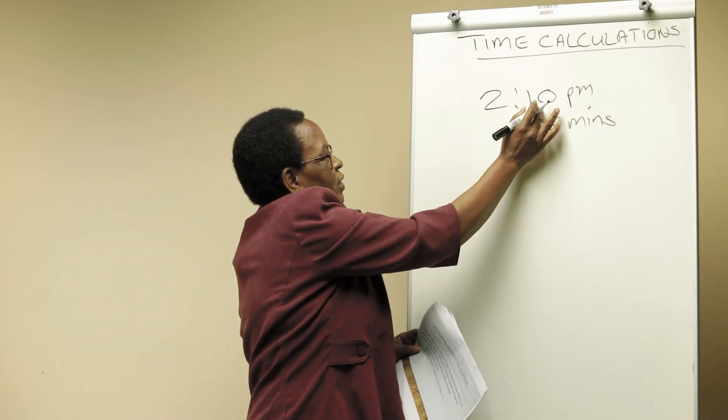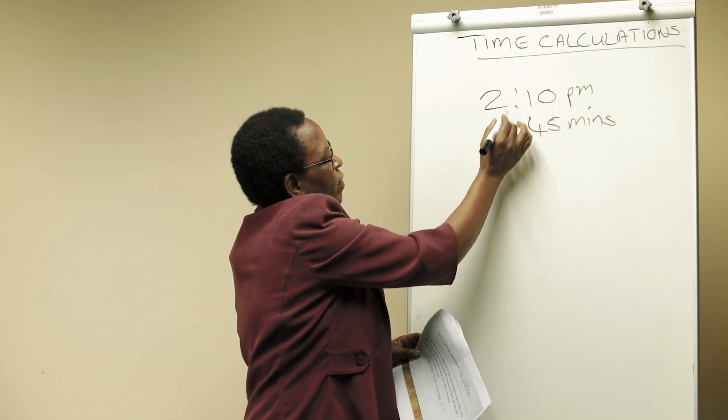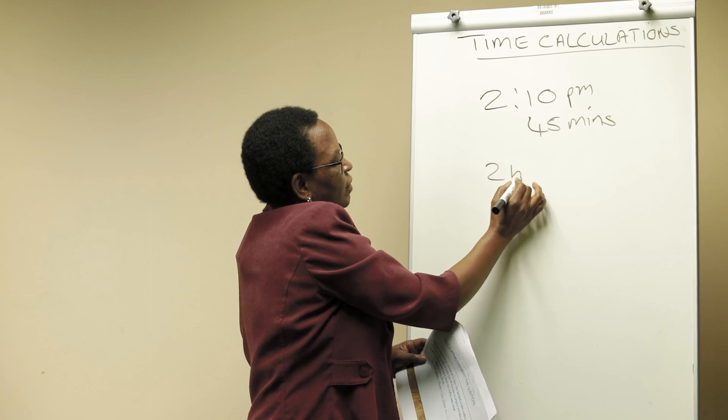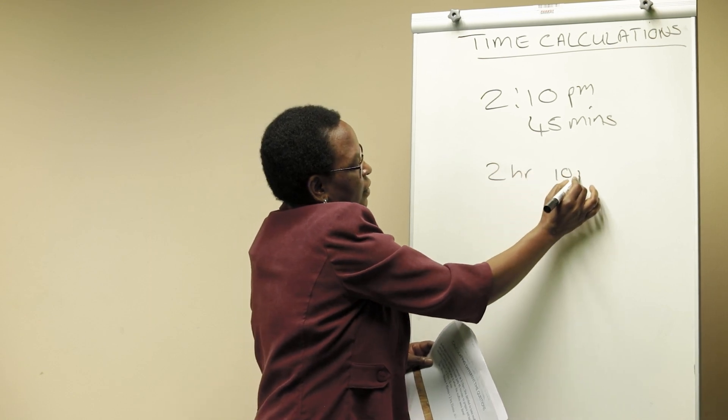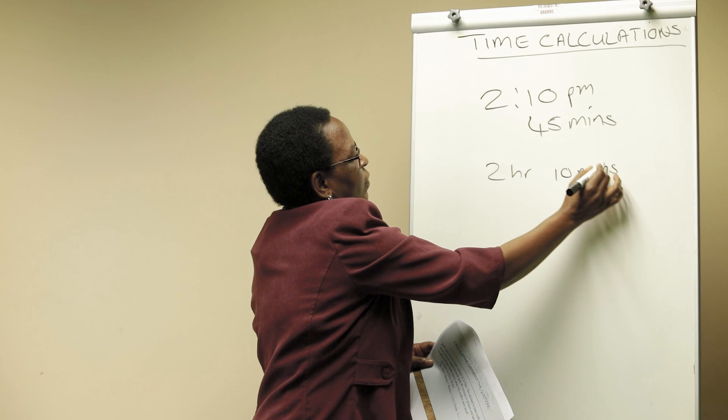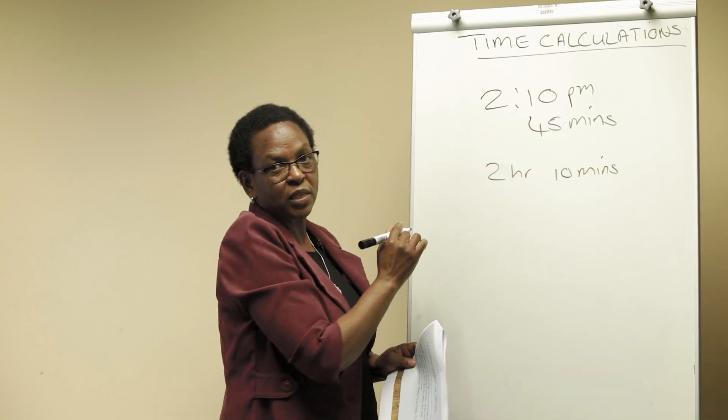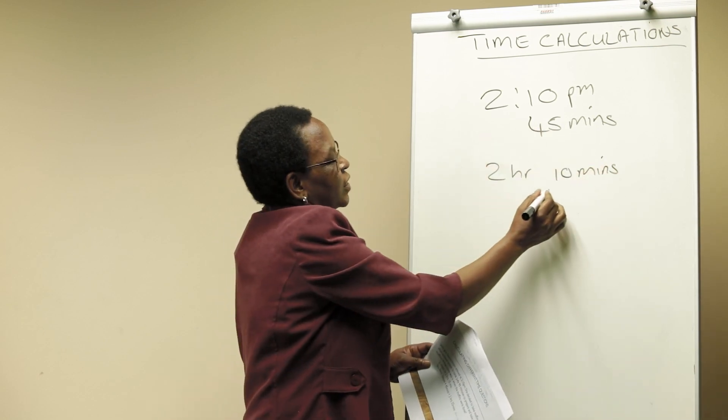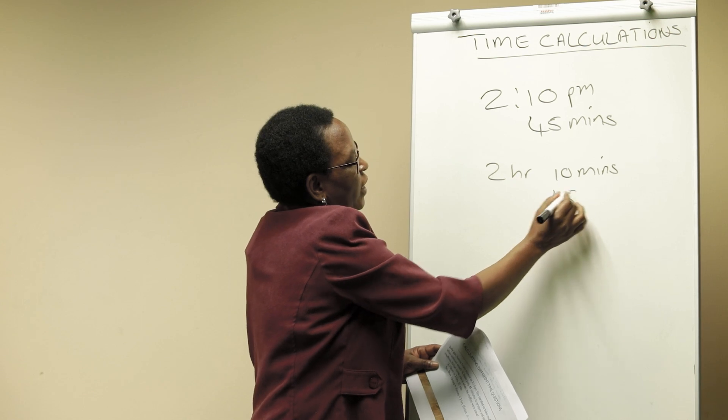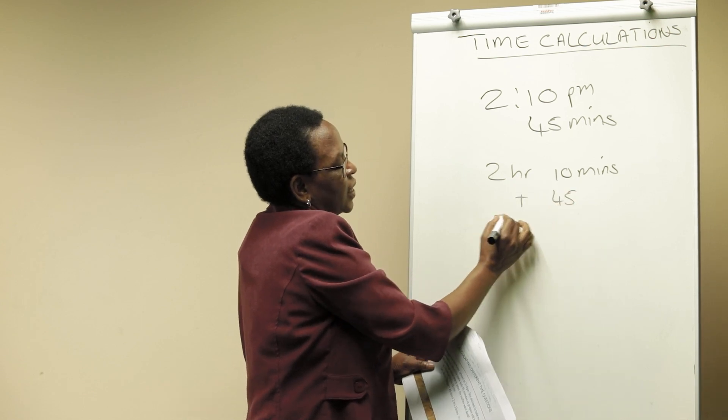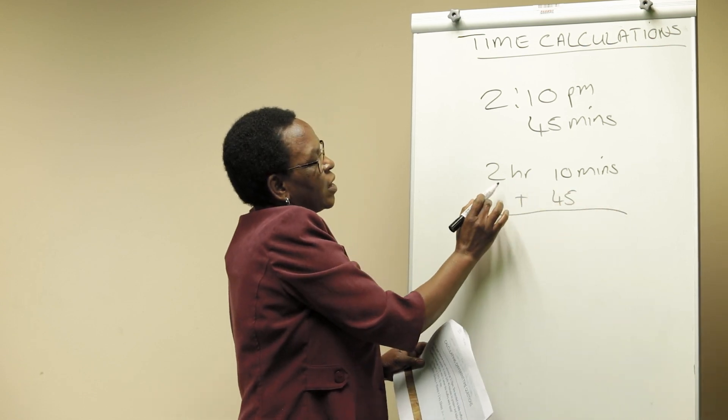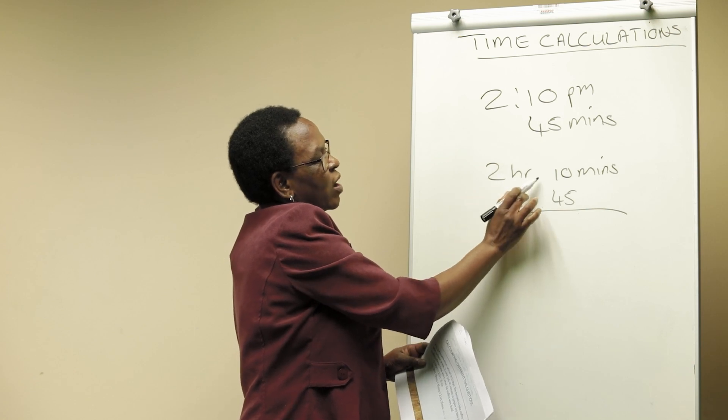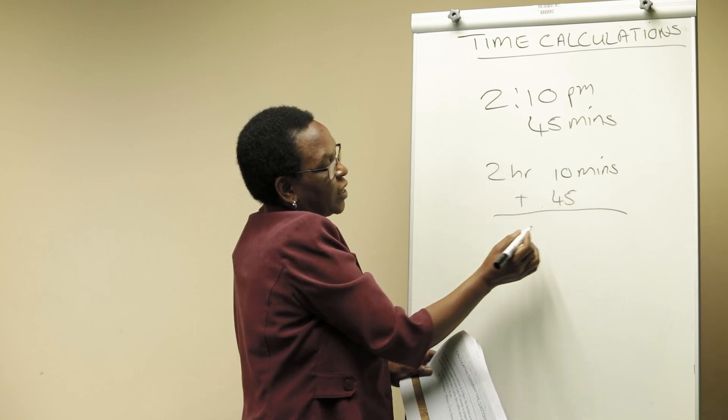This is the time when she got home. So this is 2 hours 10 minutes. And she took 45 minutes to prepare the muffins for them to be ready. So what time were the muffins ready? So we are adding 45 minutes to the 2 hours 10 minutes, which gives us what?